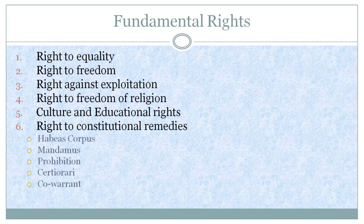Habeas Corpus: The order passed by the Supreme Court or the High Court to produce a person within a specified timeframe is called Habeas Corpus. Mandamus: When the legislature, executive or any other subordinate institutions fail to perform certain duties or works, the Supreme Court or the High Court orders them to perform these works. This order is called Mandamus. Prohibition: When a subordinate court passes a judgment beyond its jurisdiction or the judgment is against the sense of natural justice, the higher court passes an order against such judgments. This order is called Prohibition.